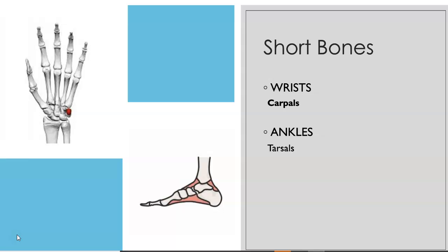Short bones are cubed in shape. They have equal length, width, and thickness. These bones provide stability and support as well as limited motion. Some examples would be in your wrists, your carpals, and in your ankles, your tarsals.